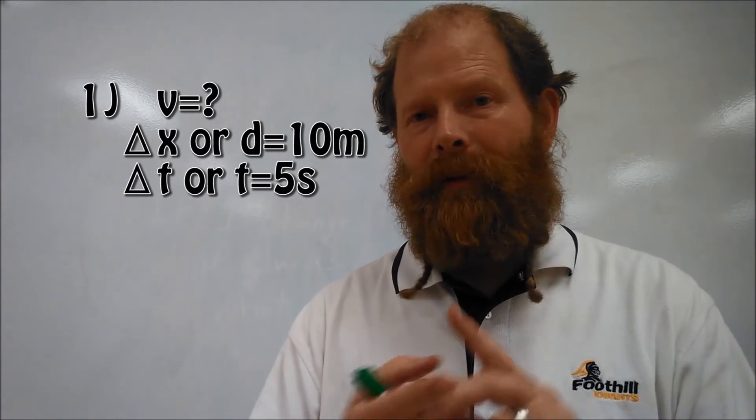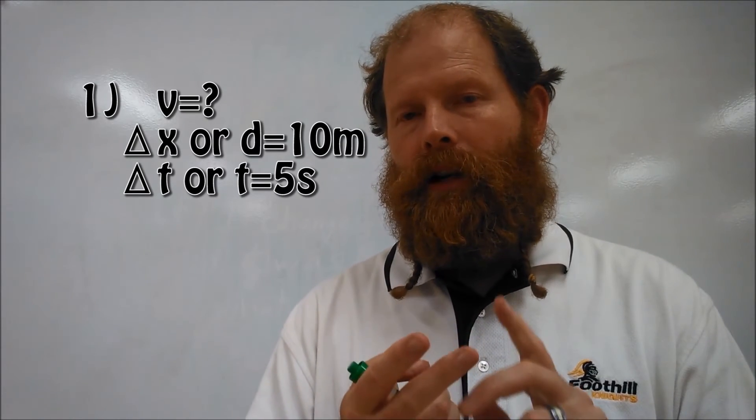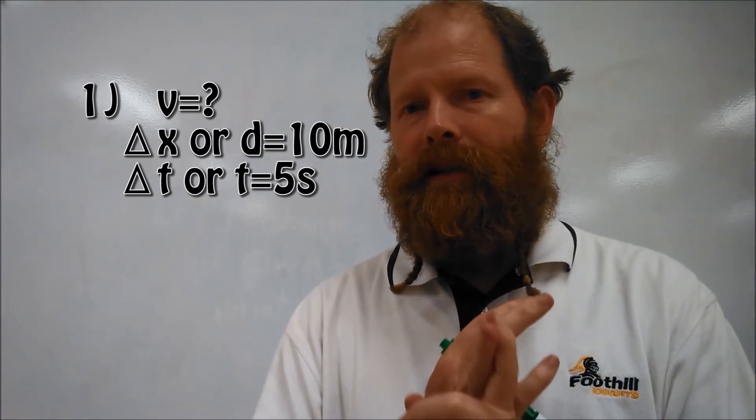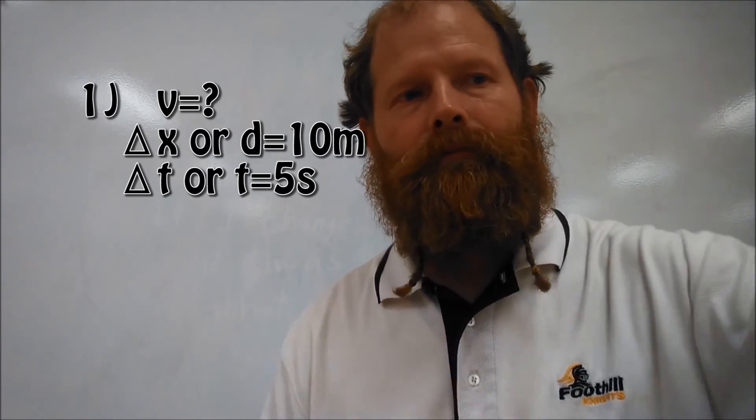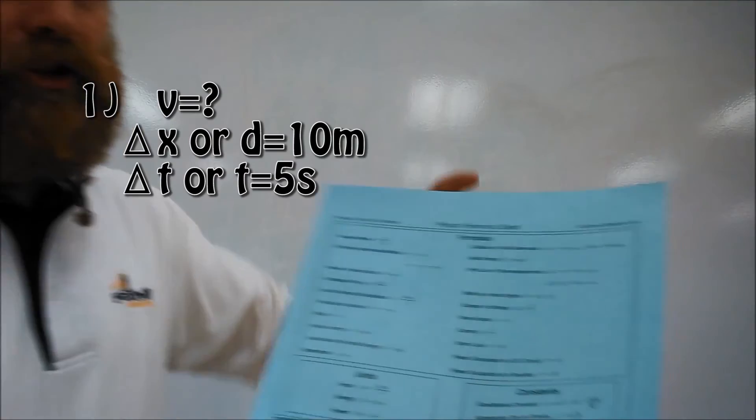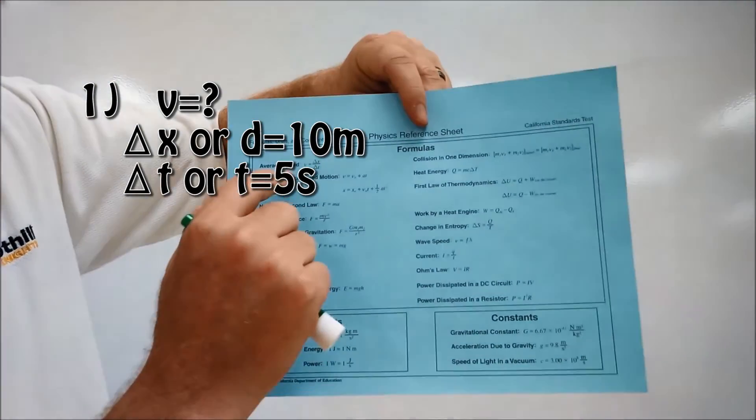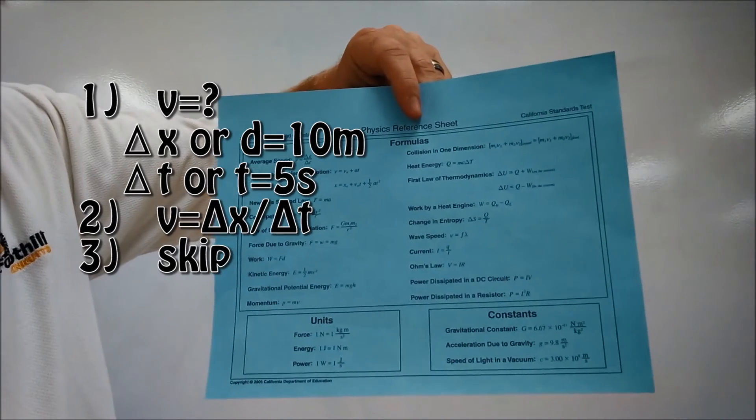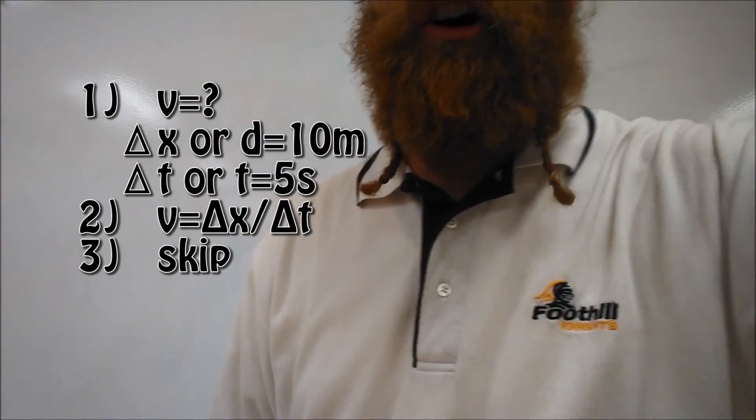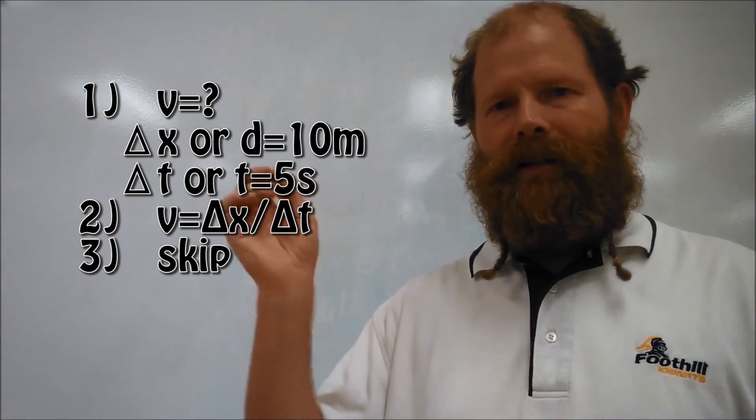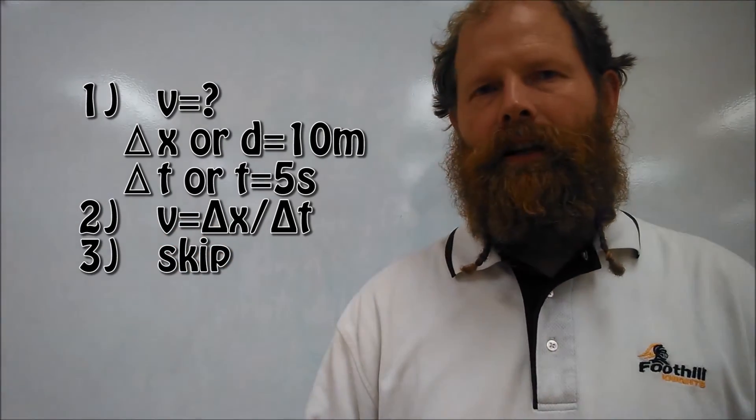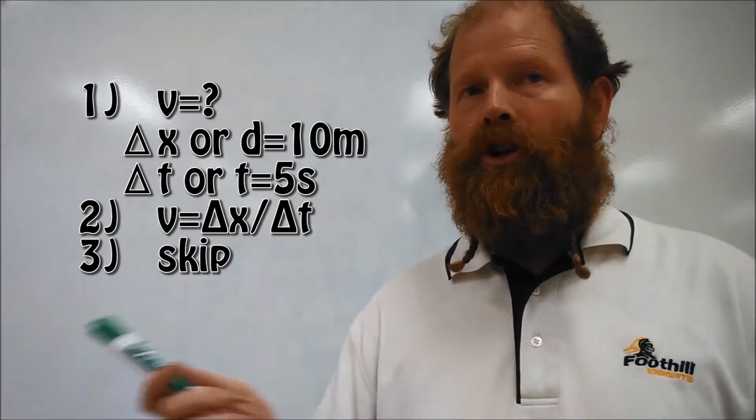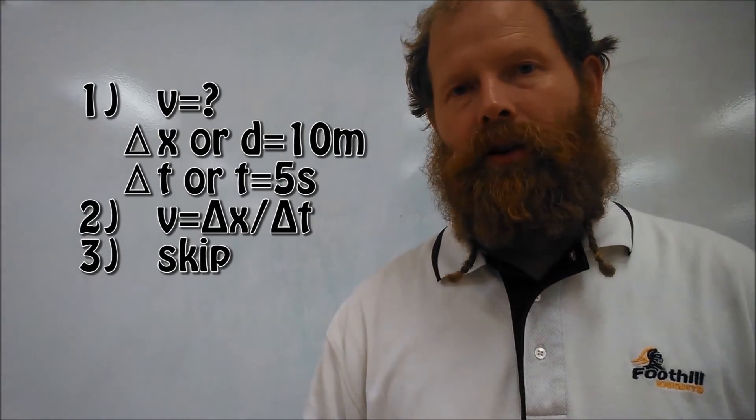So now we have to find something that has the lowercase v, has a delta X or a D, and has a delta T or a T. And the only thing that matches all three of those criteria is our very first equation. V equals delta X over delta T. So at this time we could go back and cross out the D and cross out the T because we're going to be using delta X and delta T. Then we write our equation. V equals delta X over delta T.